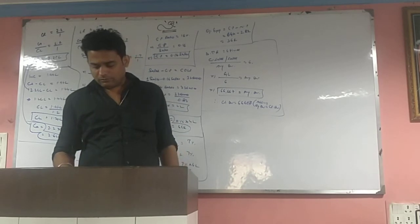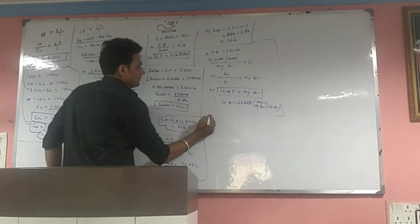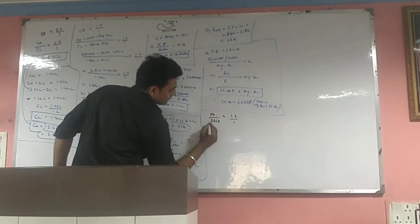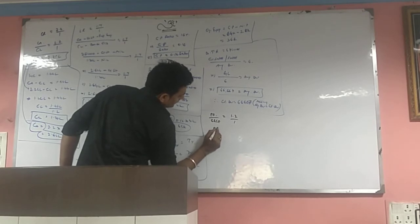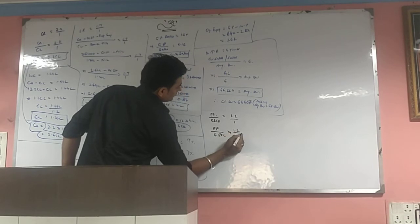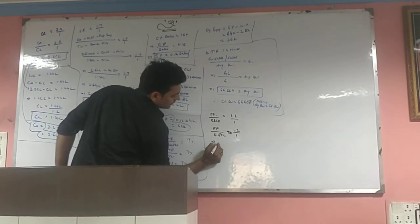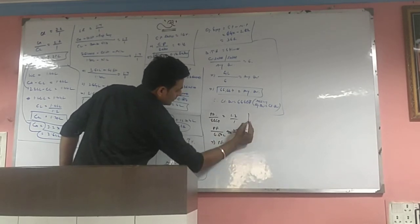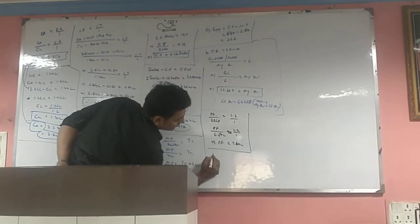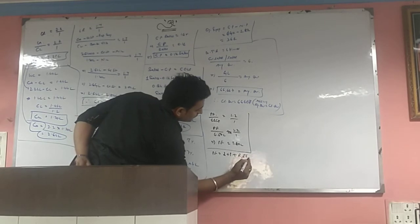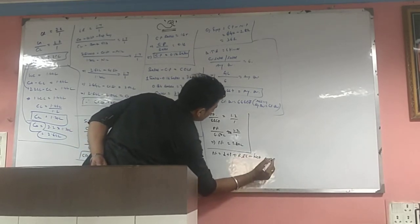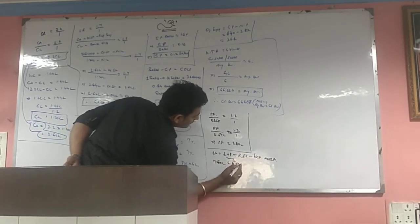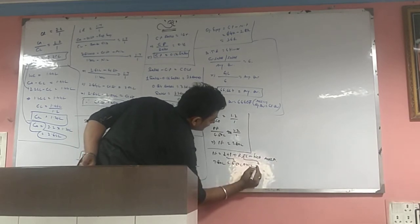Equity share capital given, proprietor fund to equity share capital ratio given. Proprietor fund by equity share capital equals 1.2:1. Equity share capital is 6,50,000. So proprietor fund equals 1.2 times 6,50,000, equals 7,80,000. Proprietor fund equals equity plus preference plus reserve and surplus minus fictitious assets. Equity is 6,50,000, preference nothing mentioned. Reserve and surplus we need to calculate.